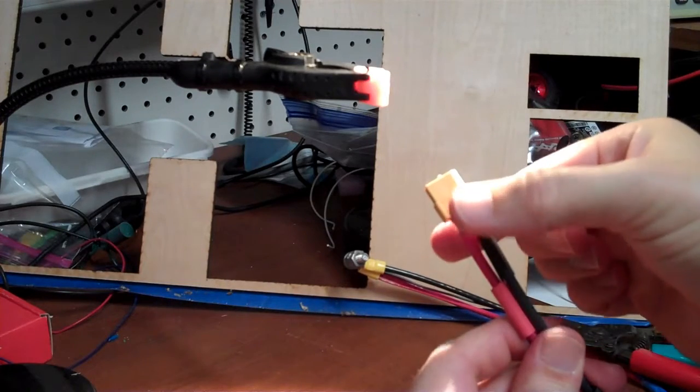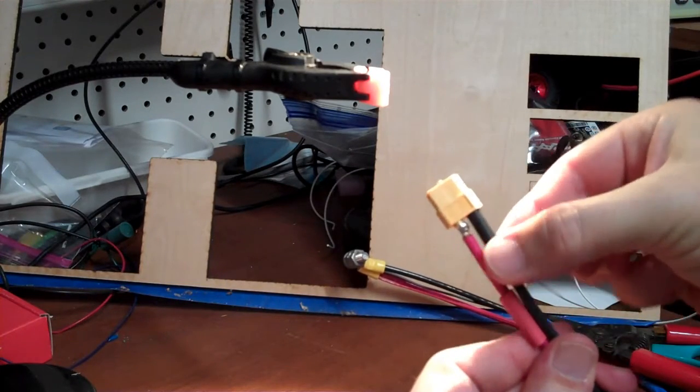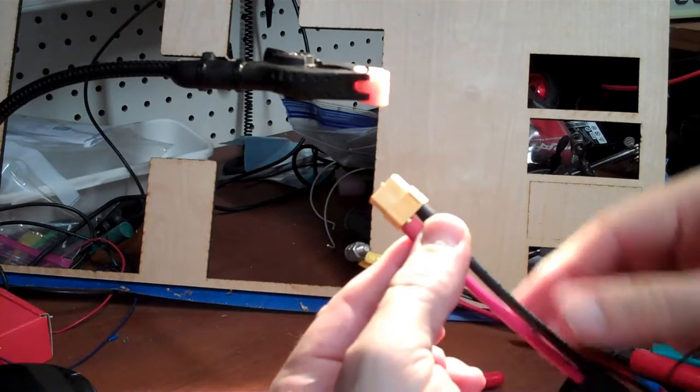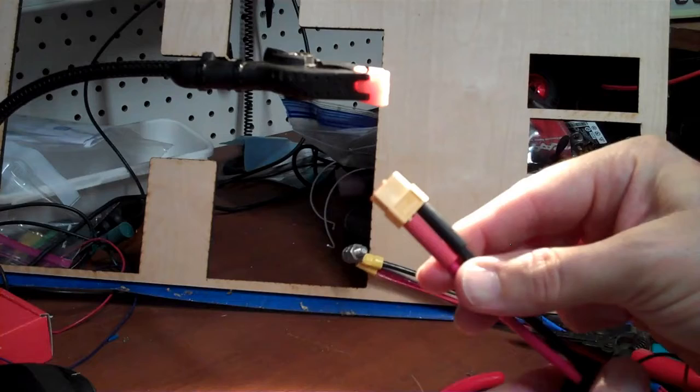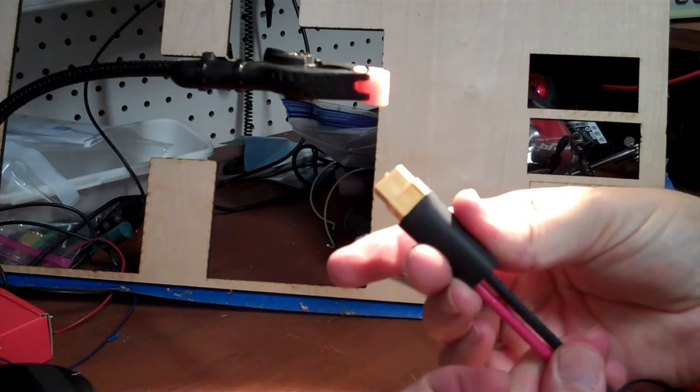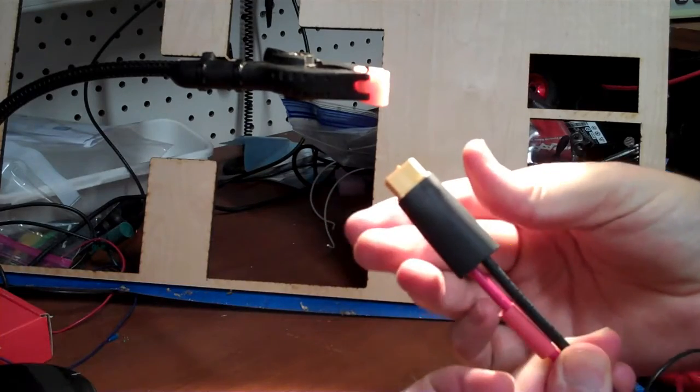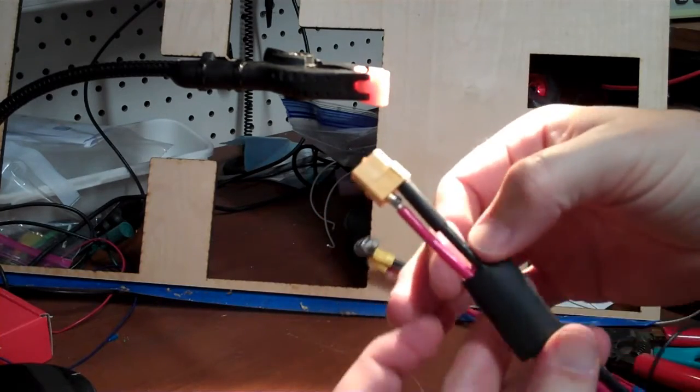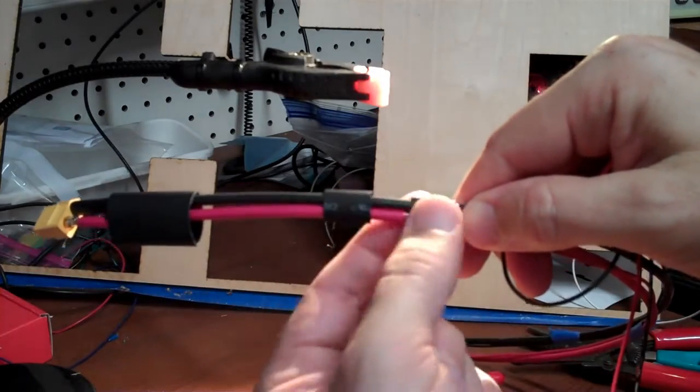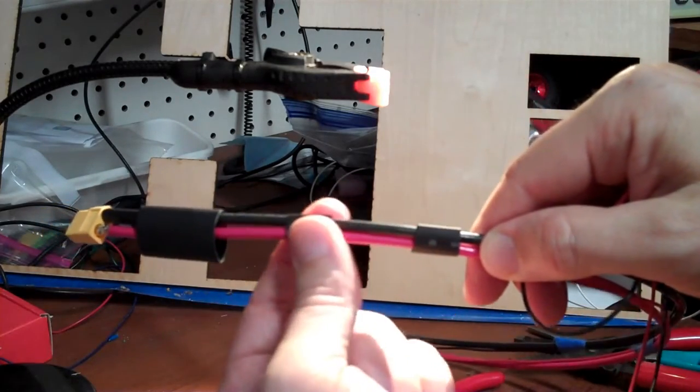After these connectors are fully cooled, you can move this heat shrink tubing up to cover those two solder joints. And then after you heat shrink that in place, you can move this one up over the entire connector like that and heat shrink it in place. And then you can take these guys down here and heat shrink them at various points on your wire to kind of keep your wires together.